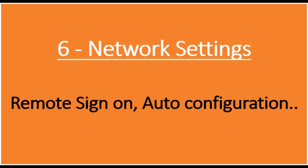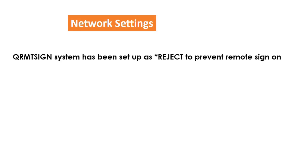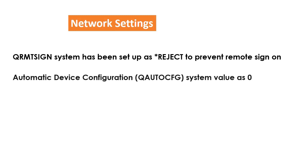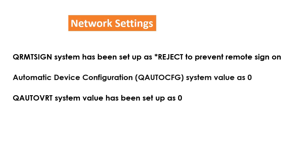Point number 6: Network Settings. Ensure that the remote sign-on control QRMTSIGN system value has been set to *REJECT to prevent remote sign-on. Make sure that automatic device configuration QAUTOCFG value — which configures locally attached devices automatically — is set to 0. Ensure the virtual devices QAUTOVRT system value has been set to 0. The default value of 0 ensures that no virtual devices are created automatically, which limits access to the server.